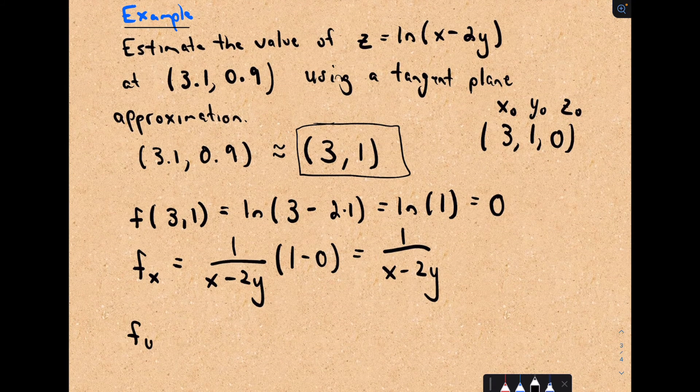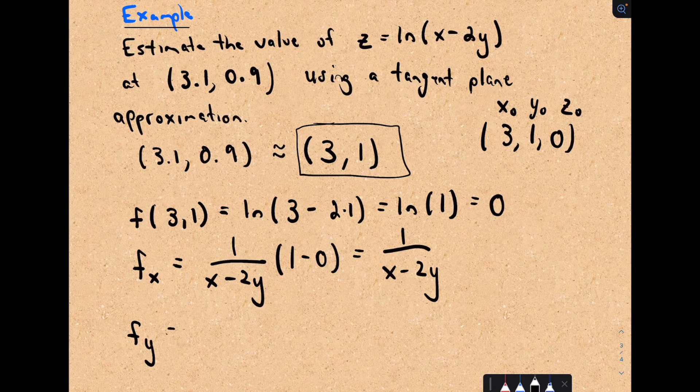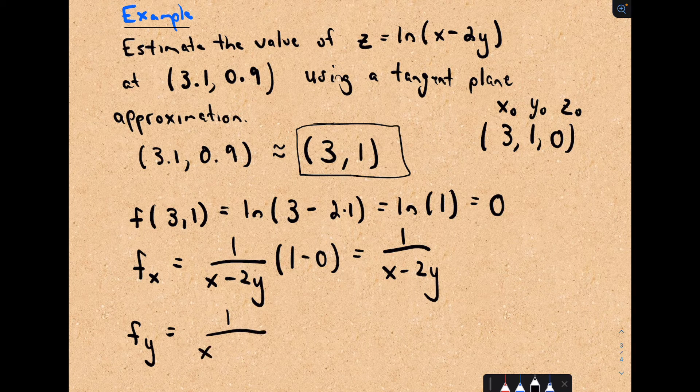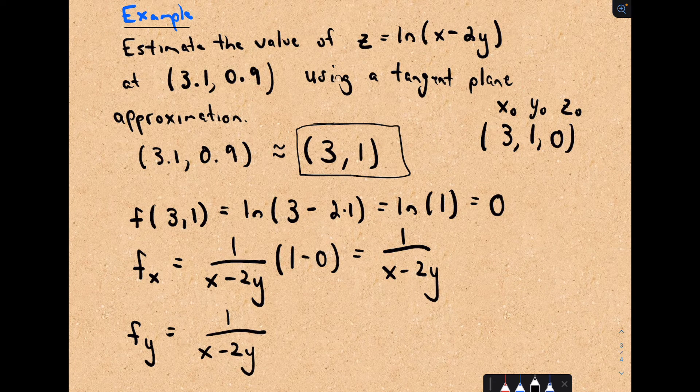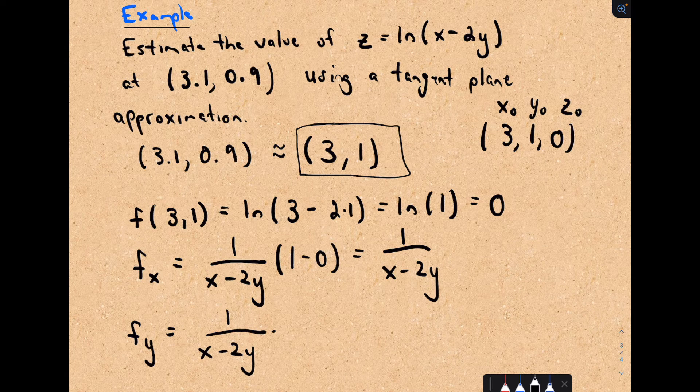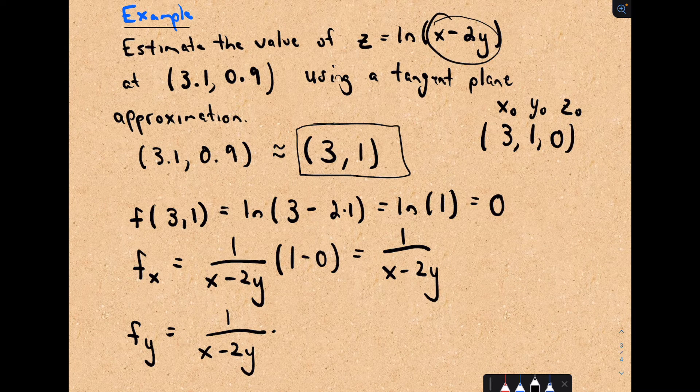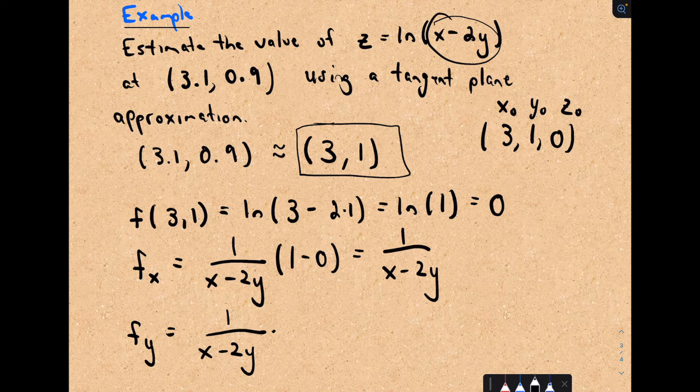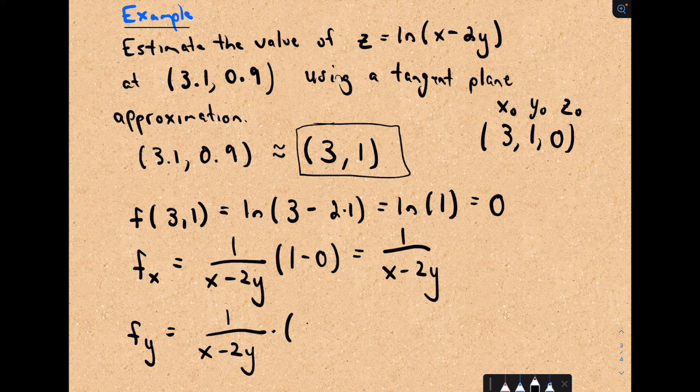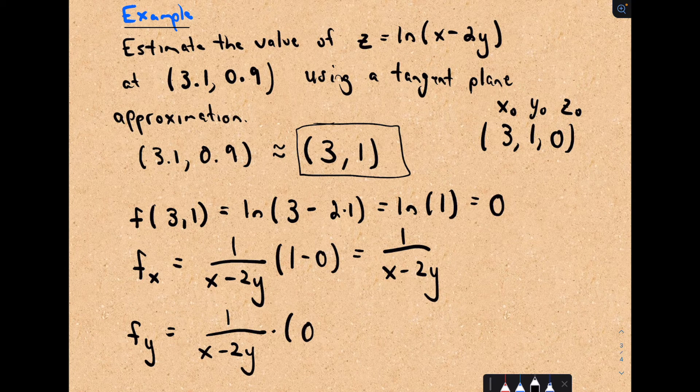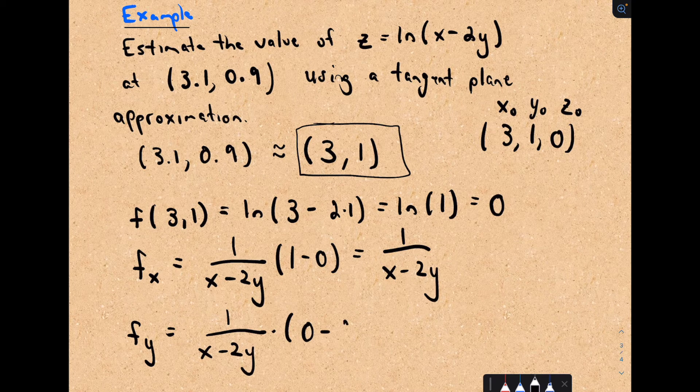And likewise, we can evaluate the partial derivative with respect to y. So I would get 1 over x minus 2y. And now I have to take the derivative of the inside using the chain rule. Now I'm treating x like a constant, so if I'm treating x like a constant, its derivative will be 0.